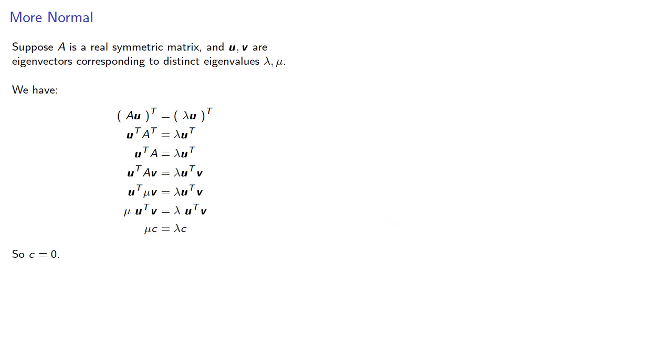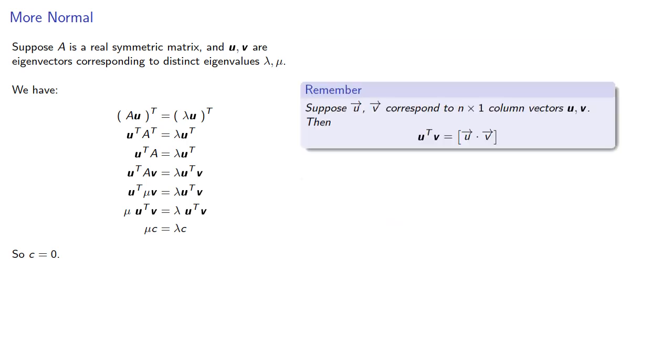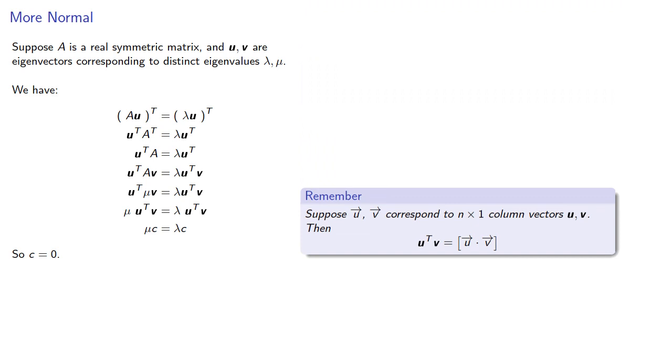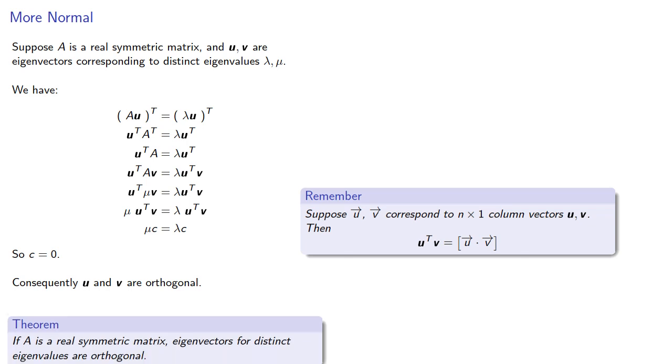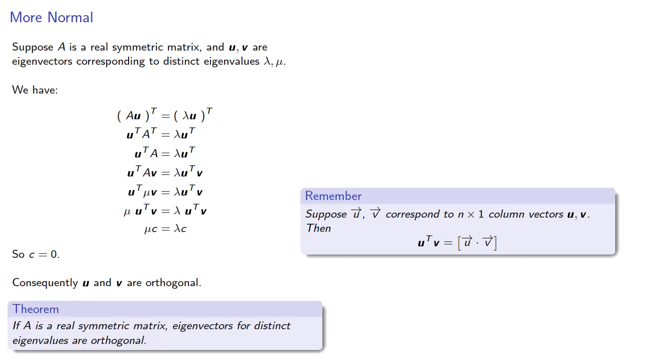But remember, if u and v correspond to n-by-one column vectors u and v, then u transpose v is the one-by-one matrix whose entry is the dot product. And since our matrix must be the zero matrix, this means the dot product of the two vectors must be zero, which means they're orthogonal. Consequently, if A is a real symmetric matrix, eigenvectors for distinct eigenvalues are orthogonal.